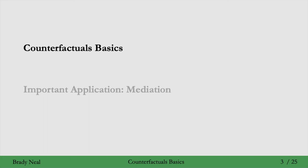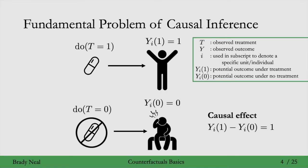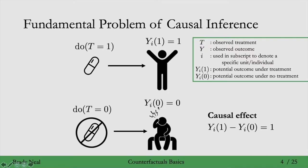Let's jump straight in to the basics of counterfactuals. First, recall the fundamental problem of causal inference that we saw back in week two. In this example, you have the choice of either taking a pill or not taking a pill, where taking a pill corresponds to do T equals 1 and not taking corresponds to do T equals 0, and you want to know if this pill has a causal effect on your headache. The subscript i denotes a specific individual, and the parentheses denotes what treatment we're talking about. These are potential outcomes.